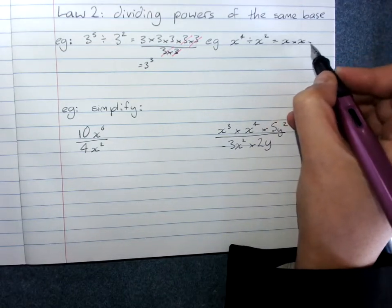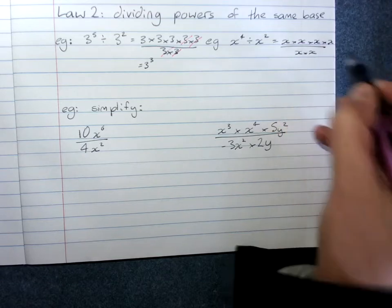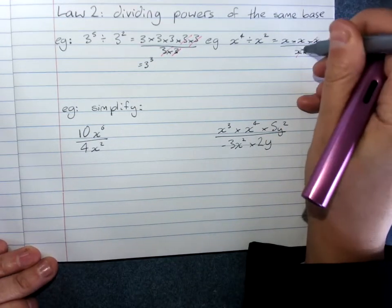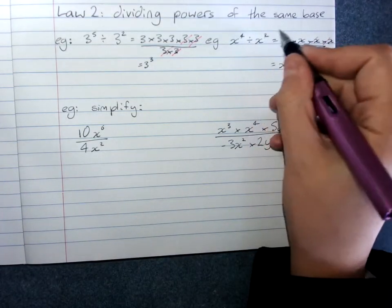Expanding this one out to check. Cancel any common factors. And I've got x squared. 4 minus 2 is 2.